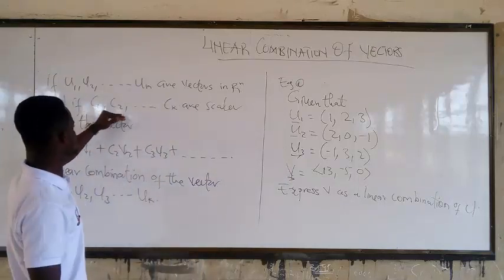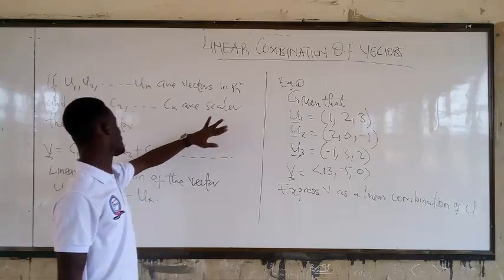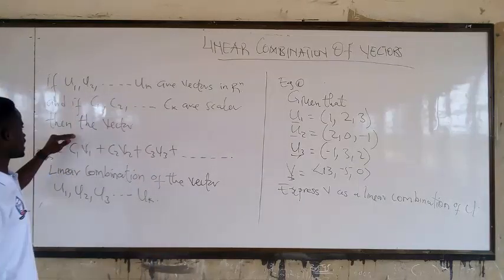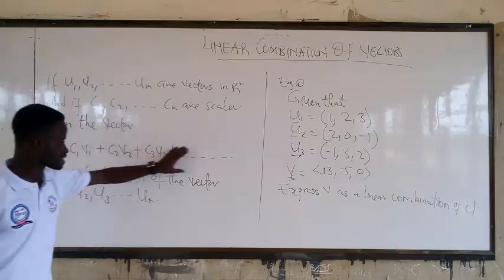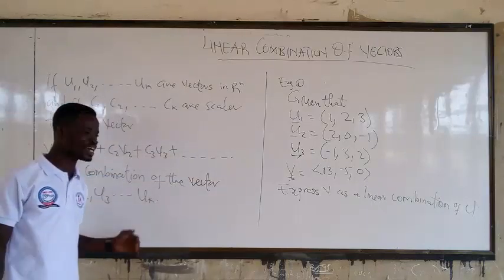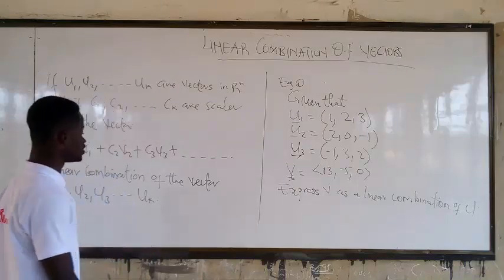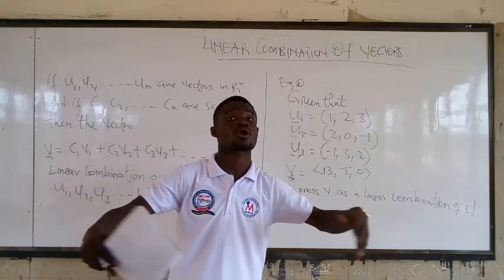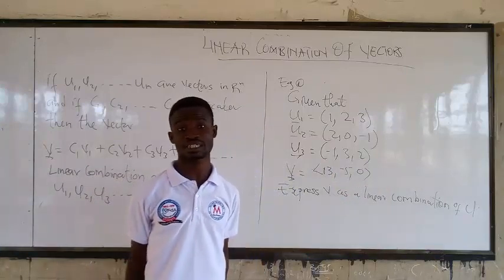And if C1, C2, C3 are scalars, so that means that these are the scalar multiples. Then the vector, this is the linear combination of the vector. So that's all that we are talking about.